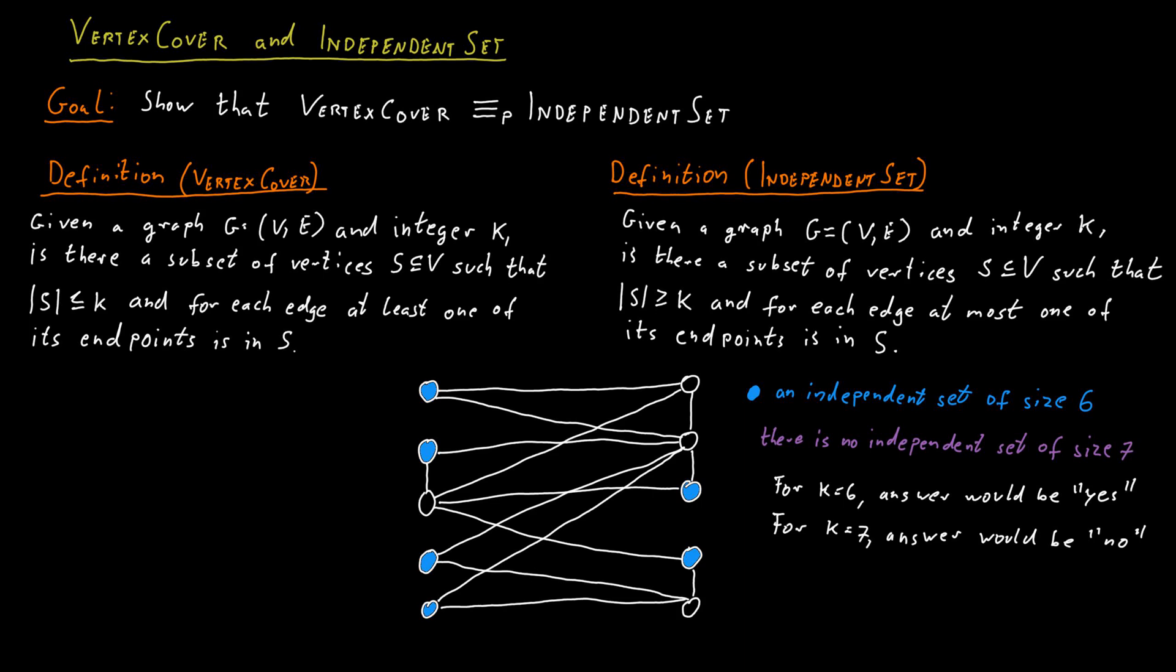Here is an example—in fact, the same graph we used for independent set. If we set K to 4, the answer is yes. We can find a vertex cover of size at most 4, as indicated here. We can check that each edge has at least one endpoint selected; some edges even have both endpoints selected. But there is no vertex cover of size 3 or smaller—this is not easy to see, but it's true.